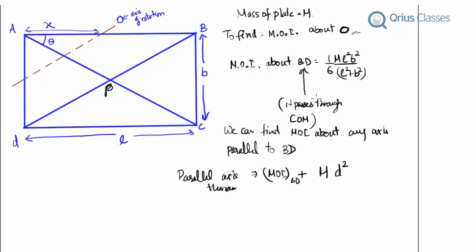We use the parallel axis theorem when the moment of inertia of the body is known about an axis passing through the center of mass — this is the essential condition. Then we can find the moment of inertia about any parallel axis. If the axis does not pass through the center of mass, we cannot apply the parallel axis theorem. This condition is fulfilled here because BD passes through center of mass at point P.